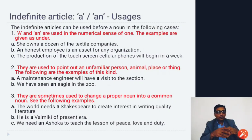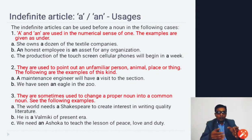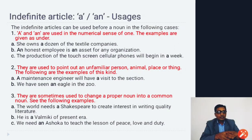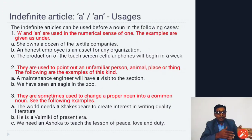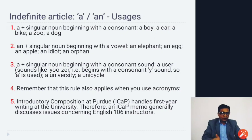They are sometimes used to change a proper noun into a common noun. A proper noun is a name given to a specific person. When we want to change it into a common noun, we use 'a' or 'an'. Examples: 'The world needs a Shakespeare to create interest in writing quality literature,' 'He is a Wali Mickey of the present era,' 'We need an Ashoka to teach the lesson of peace, love, and duty.'